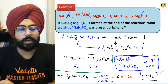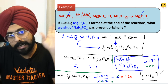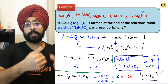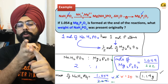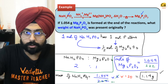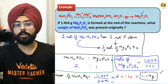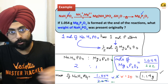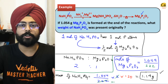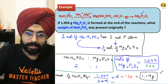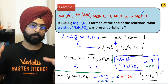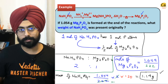JEE Advanced questions from stoichiometry will involve the Principle of Atomic Conservation somewhere. All the questions from redox reactions and ionic equilibrium use this concept quite a lot. This concept is very important — in case you joined the class late, watch it from the beginning.